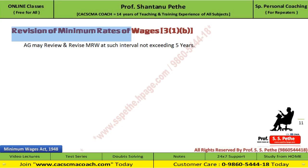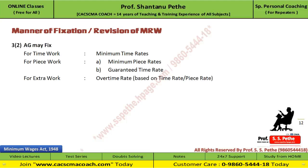Section 3.1.b covers revision of minimum rates of wages. The government may review and revise the rates from time to time — even before five years if needed. The government can fix minimum rates of wages in three ways: on a time basis, on a piece work basis, and can also fix a rate for extra or overtime work.